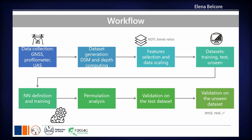We prepared extra features to improve network performance, selecting different features derived from the radiometric response of our data. All data were scaled and divided into training, test, and an unseen dataset — an entire case study used to check the network's ability to generalize. We defined the regressor network and performed a permutation analysis to check the importance of each input feature, then validated on both the test and unseen datasets.